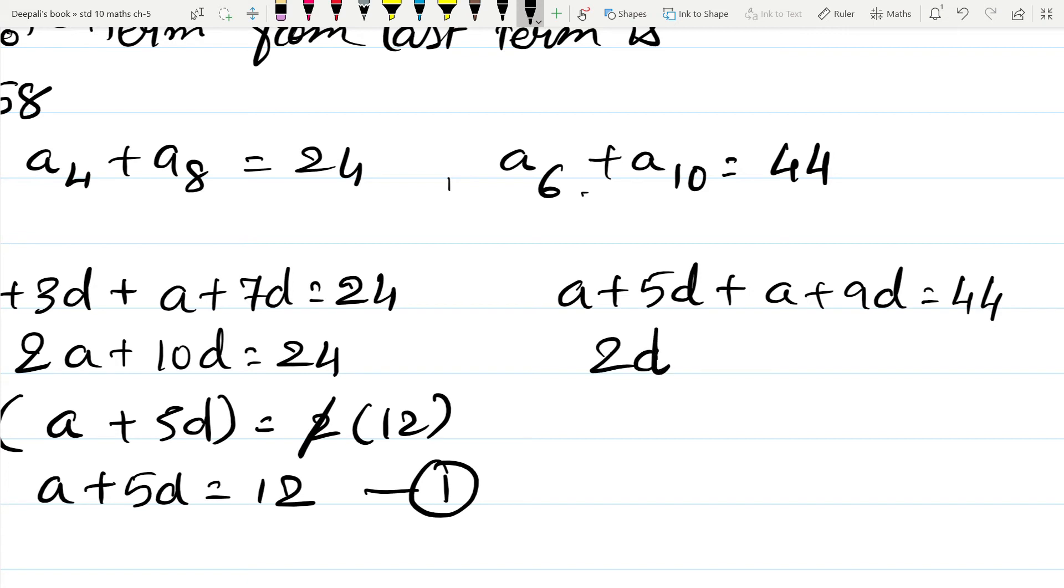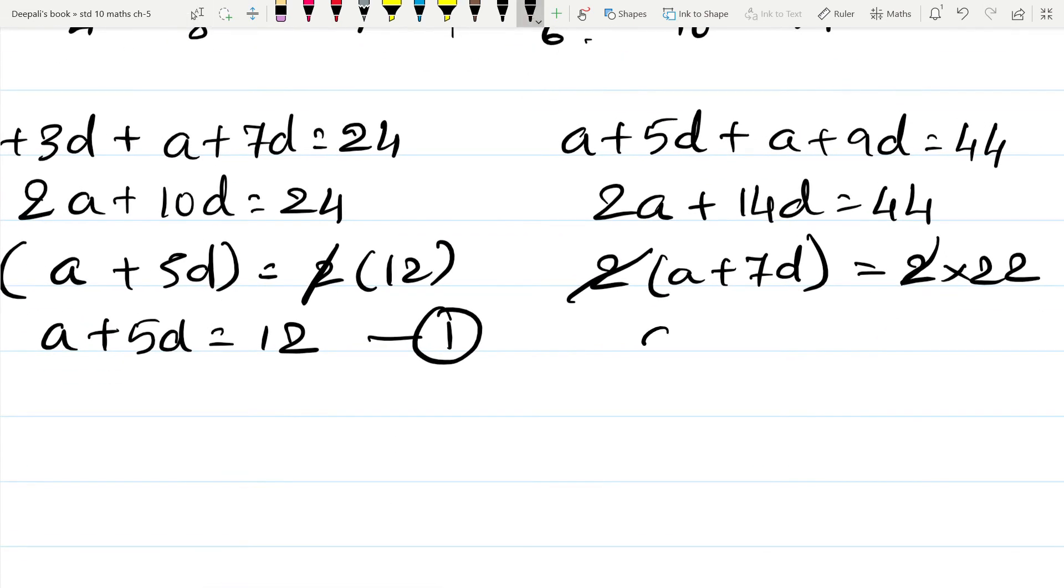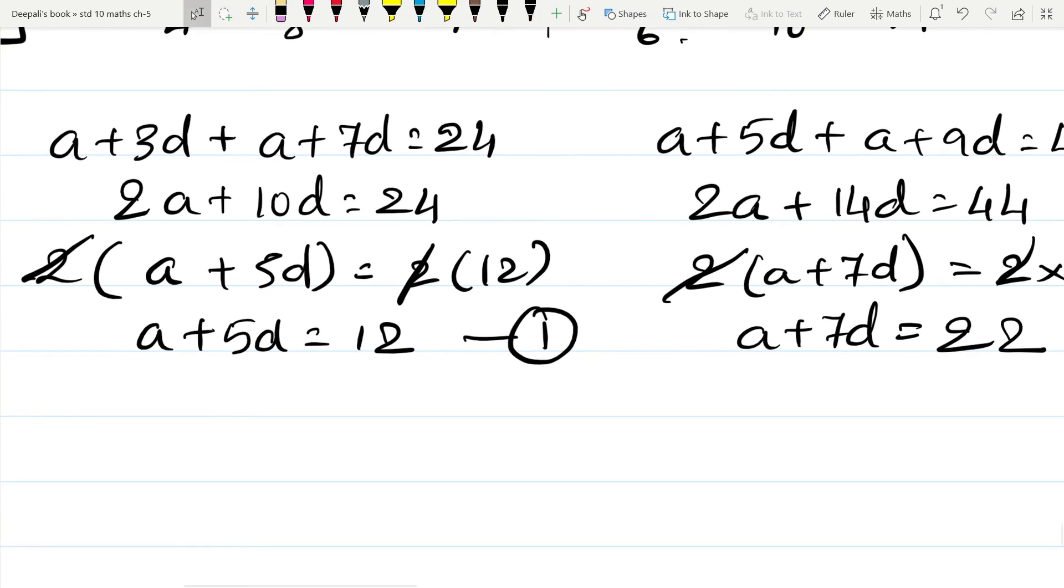If I remove common 2, A plus 5D is equal to 12. This is my first equation. Similarly, A plus 5D plus A plus 9D is equal to 44. 2A plus 14D is equal to 44. Removing 2 common, A plus 7D is equal to 22. So I get equation 2.